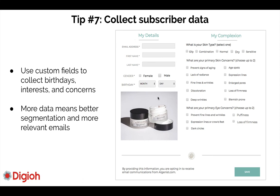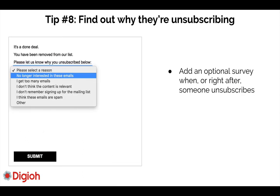Tip number seven: collect subscriber data. Learn what they're interested in — for example, if it's a skincare brand, find out what topics they care most about so you can send even more relevant emails. This data also feeds back into customer support systems so you know more about what they want. If someone says they're getting too many emails, use that signal to offer a frequency option right on the email preference center page. Always find out why they're unsubscribing and update your preference center accordingly.